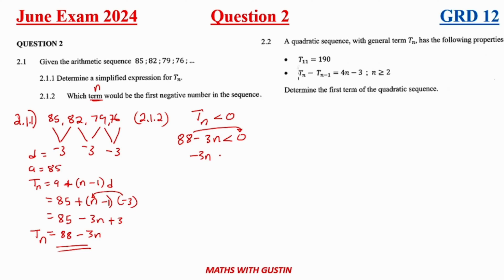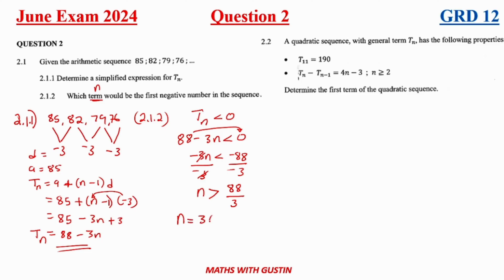Dividing both sides by negative 3 — remember, when you divide by a negative the inequality sign changes — we get n greater than 88 over 3. So the first term that is negative is term n equals 30. That is our answer.